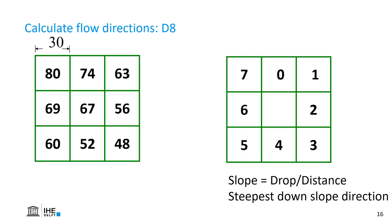Let's have a closer look at how to calculate the flow directions using the D8 algorithm. On the left side we see the elevations — each pixel has the elevation in meters, and we are looking at the center cell. We need the information of the surrounding cells because it's a focal operation like with the slope calculation. The spatial resolution is 30 meters, so the pixels are 30 by 30 meters. The question is, which direction are we going to assign to this center pixel?